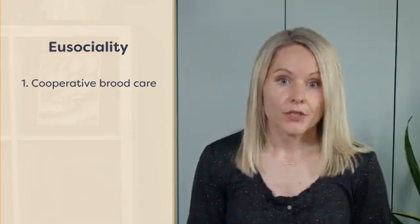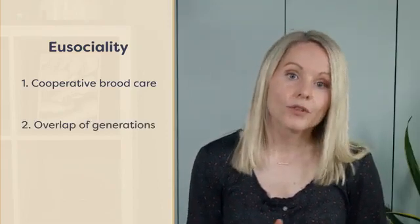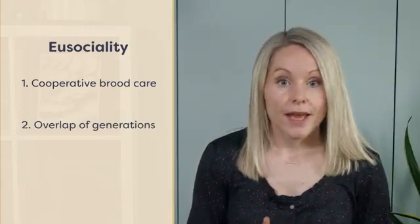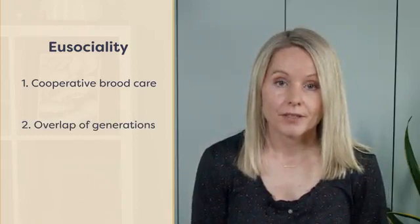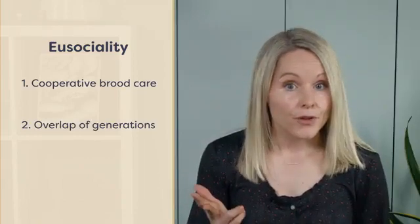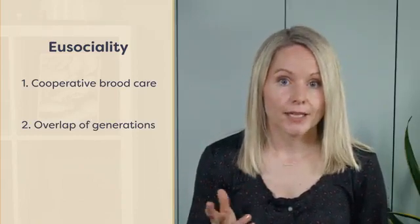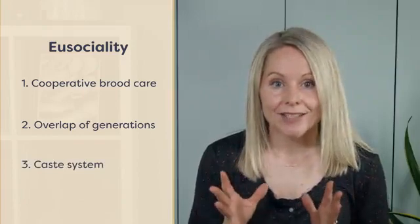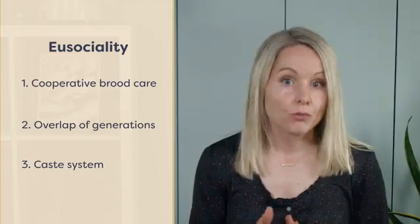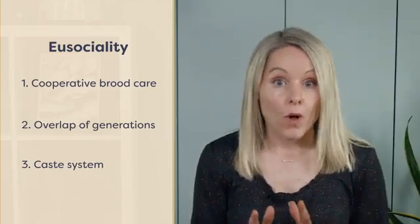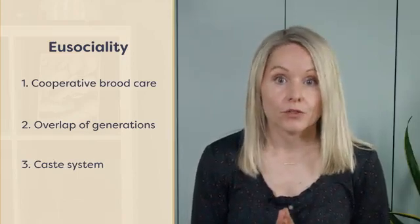The second component of a eusocial society is an overlap of generations, as the offspring assist the reproductives with colony tasks. The final trait of a eusocial society is that it has a caste system, with most of the colony represented by individuals that do not reproduce, and only one or a few reproductive individuals.